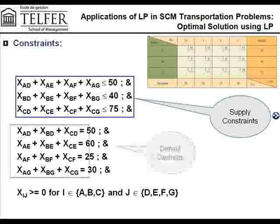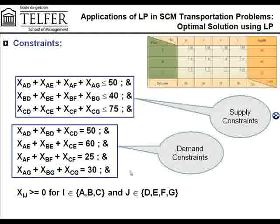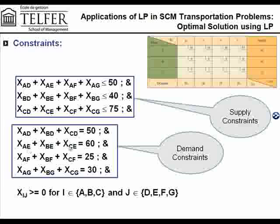Similarly, for your demand constraints, you work by columns. Everything coming into D — either from A, B, or C — take the sum of that, and it has to be equal to 50. Everything coming into E from A, B, or C has to be equal to 60.